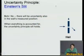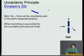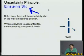Einstein didn't give up. Bohr's solution was: there will be uncertainty also in the wall's position. When everything is accounted for, the uncertainty principle still holds. If you click here, you'll be taken to the Wikipedia page on the Einstein-Bohr debates.